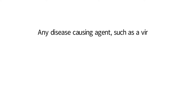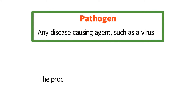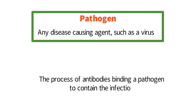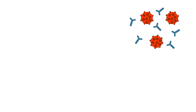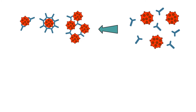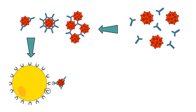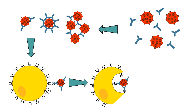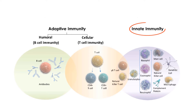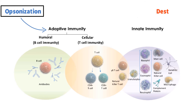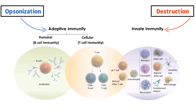Any disease-causing agent, such as a virus, can be referred to as a pathogen. The process of antibodies binding a pathogen to contain the infection is known as opsonization. Opsonization by antibodies not only prevents the spread of infection, but marks the bacteria or viruses for destruction. Phagocytic cells circulating in the blood and fluid surrounding the tissues of the body can detect the presence of antibodies bound to pathogens and then engulf and destroy the opsonized bacteria or viruses. These phagocytic cells are not B cells or T cells and are part of the innate immune response. So while the process of opsonization is part of the adaptive immune response, the actual destruction of pathogens involves the innate immune response.